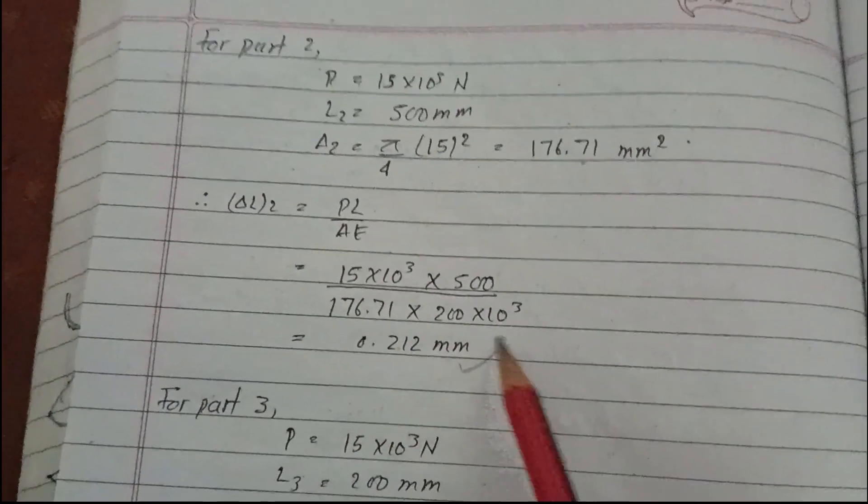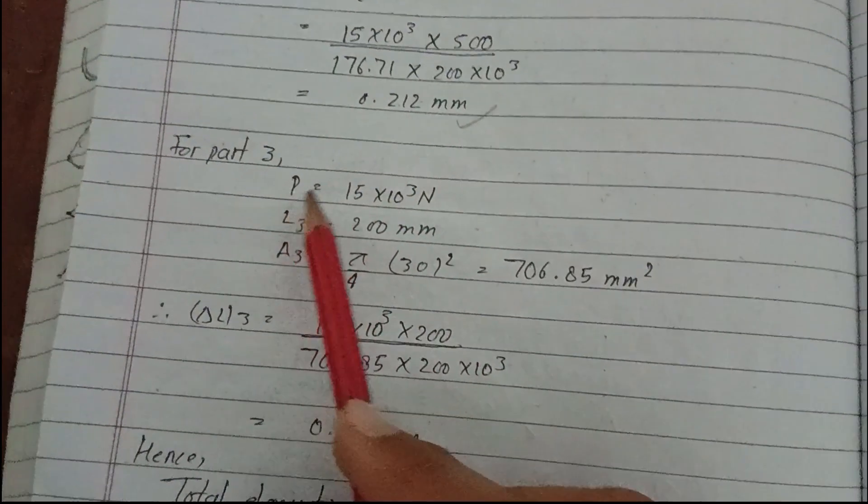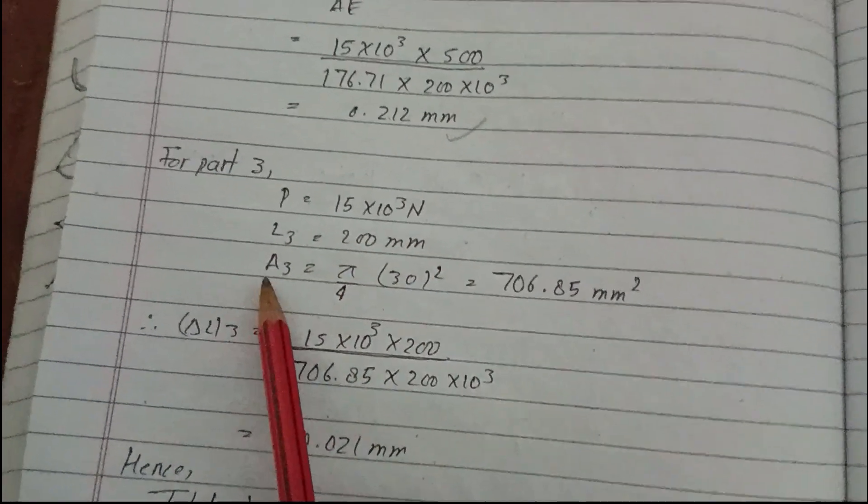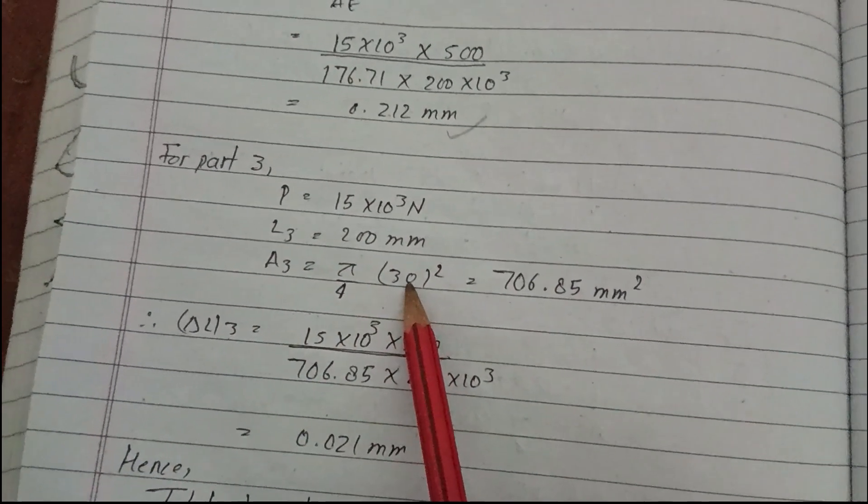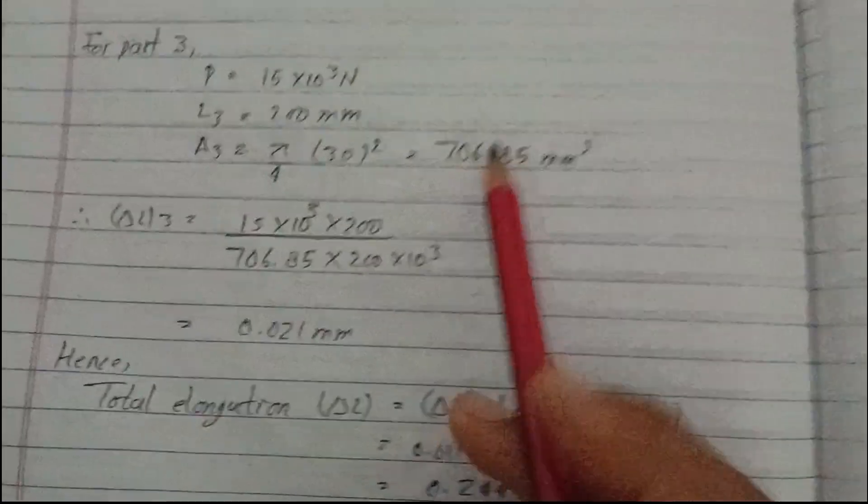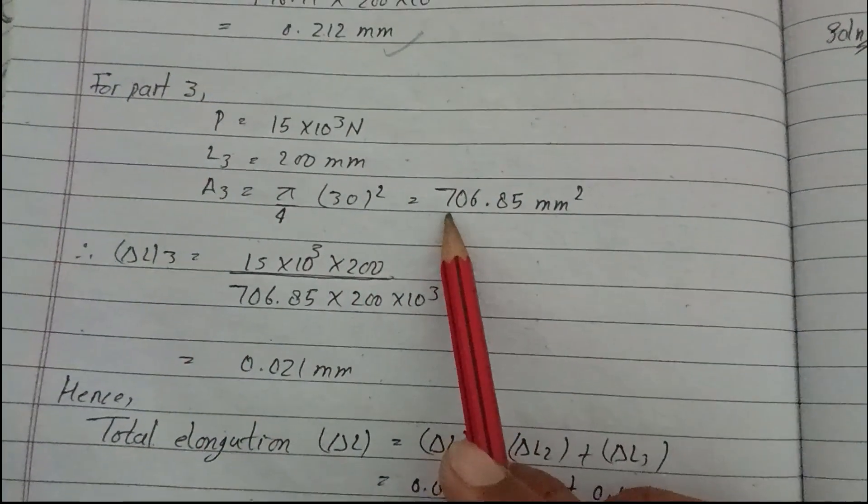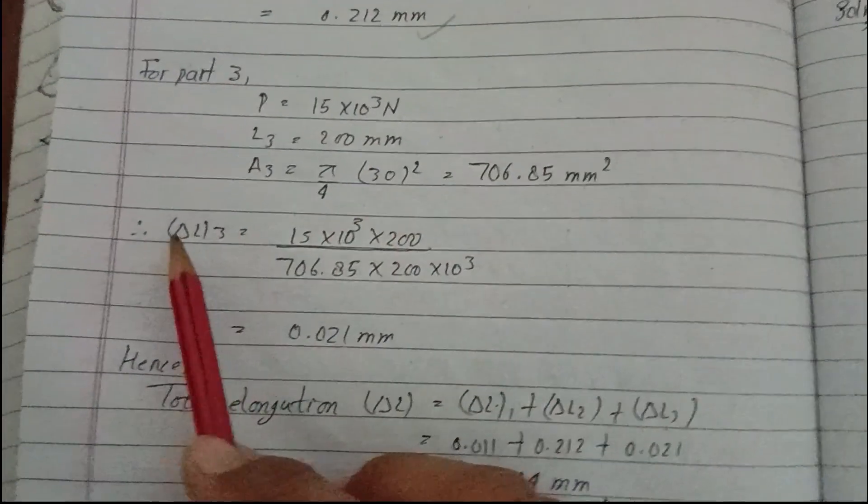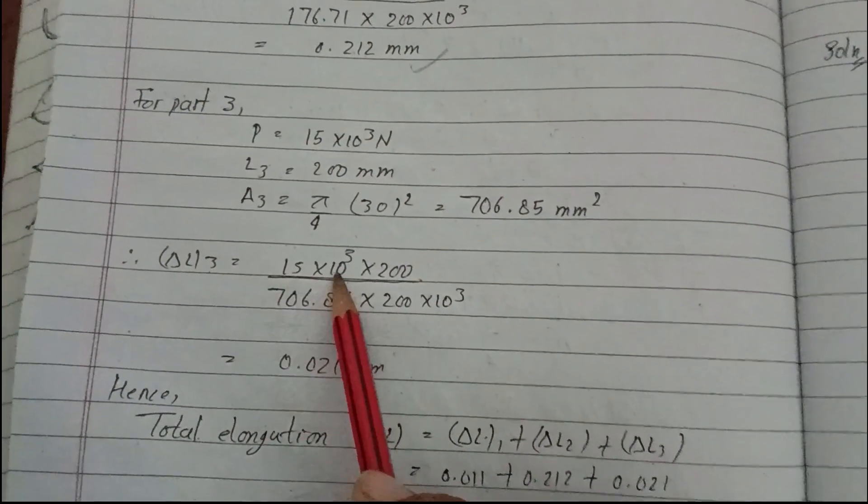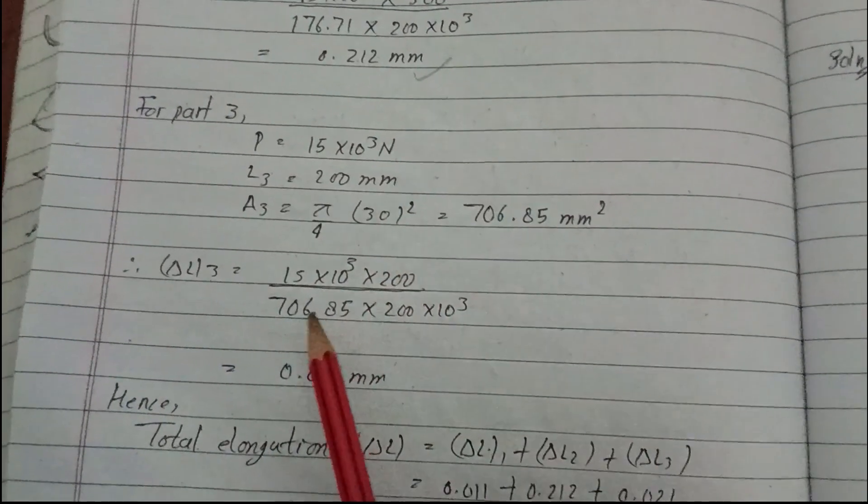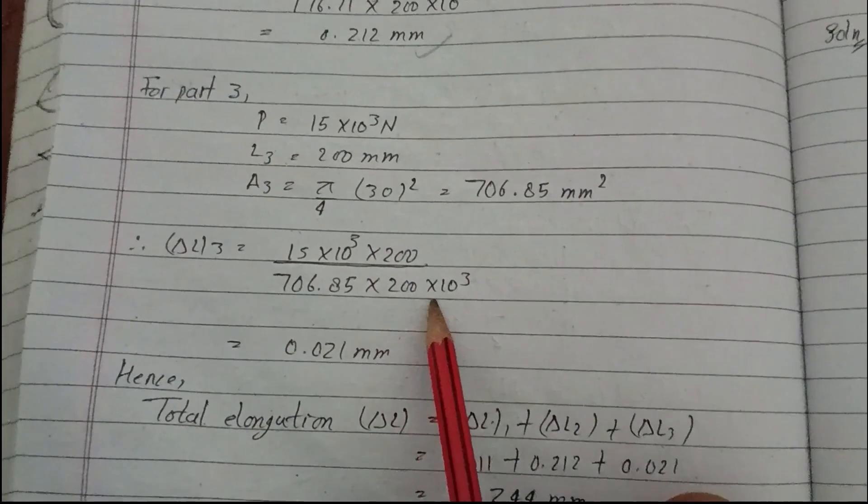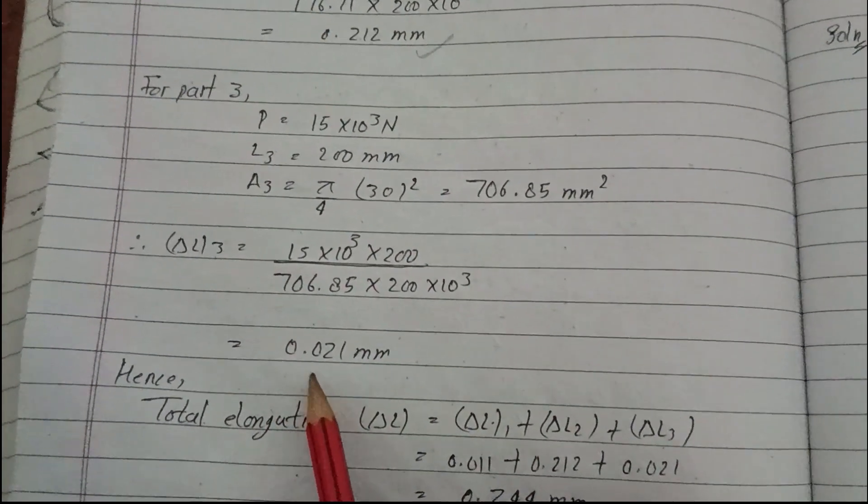For part three: The load is the same, 15×10³ Newton. L3 is 200 mm. Area A3 equals π/4 × D² where D equals 30 mm, so A3 equals 706.85 mm². The elongation in part three, ΔL3, equals (15×10³ × 200)/(706.85 × 200×10³), giving 0.021 mm.